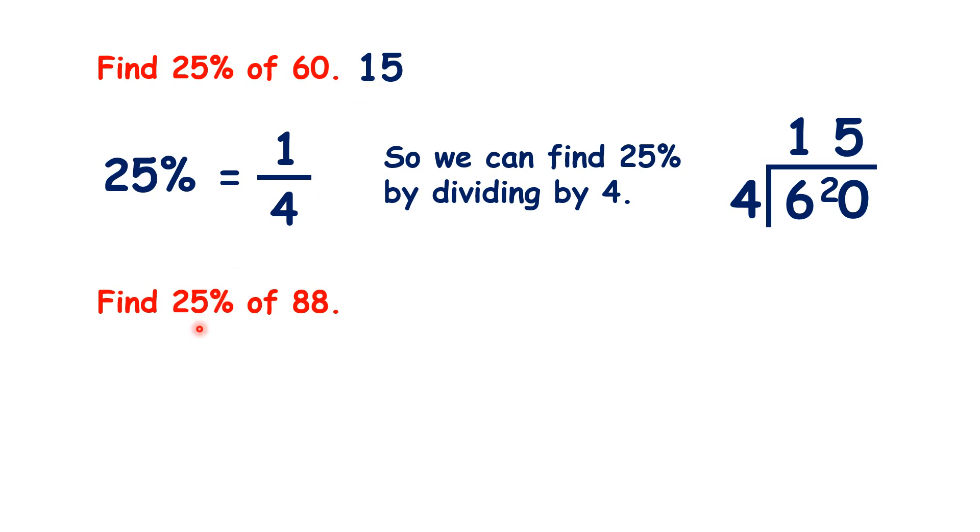So to find 25% of 88, again because 25% is one quarter, we can divide by 4 to get 22.